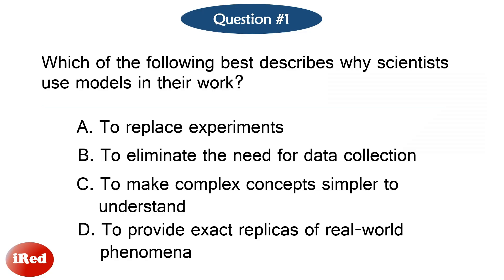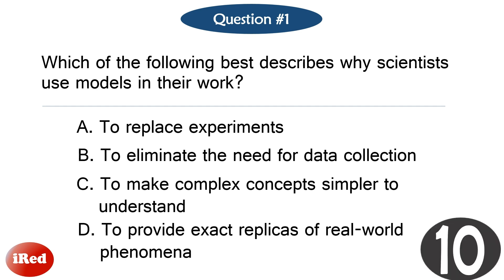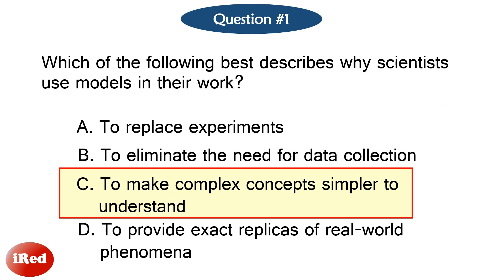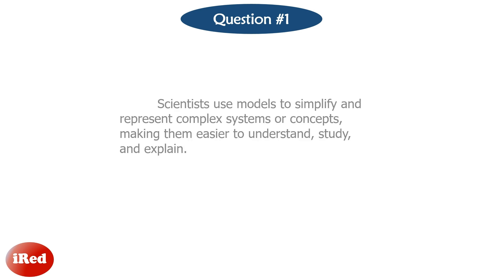Question number one. Which of the following best describes why scientists use models in their work? The correct answer is letter C: to make complex concepts simpler to understand. Scientists use models to simplify and represent complex systems or concepts, making them easier to understand, study, and explain.